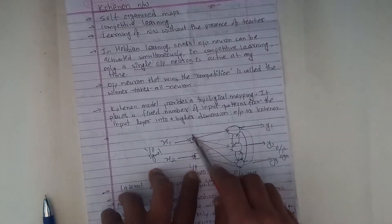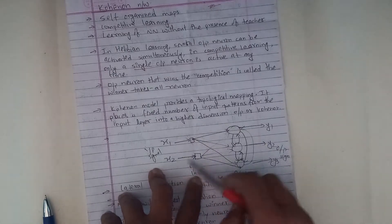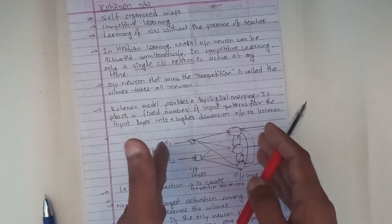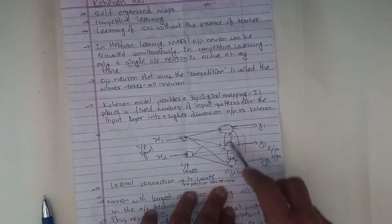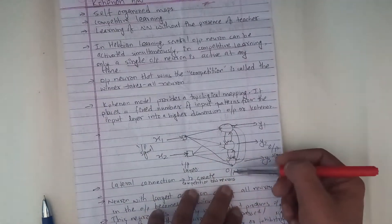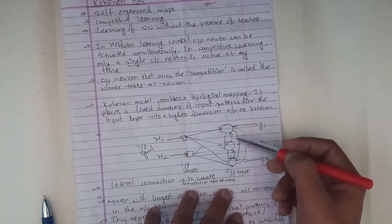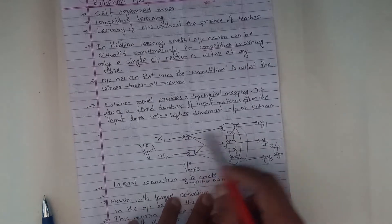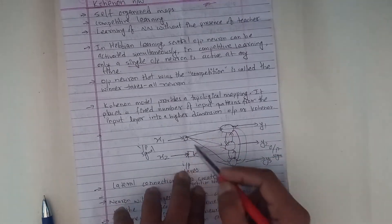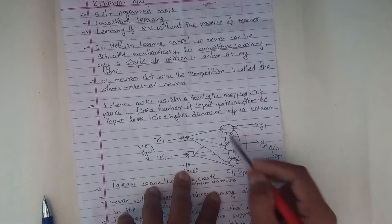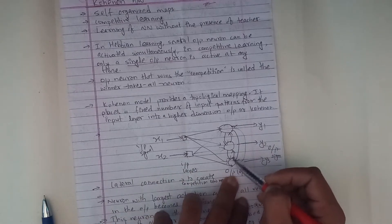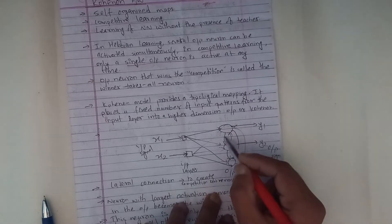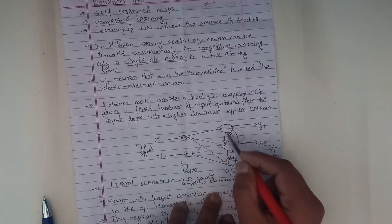Now we have two inputs. Kohonen network, Kohonen layer. We have three neurons in the output layer. There is a connection — there are also lateral connections in this neuron, as there used to be narrow connections between input and output. This neuron contains all the lateral connections.